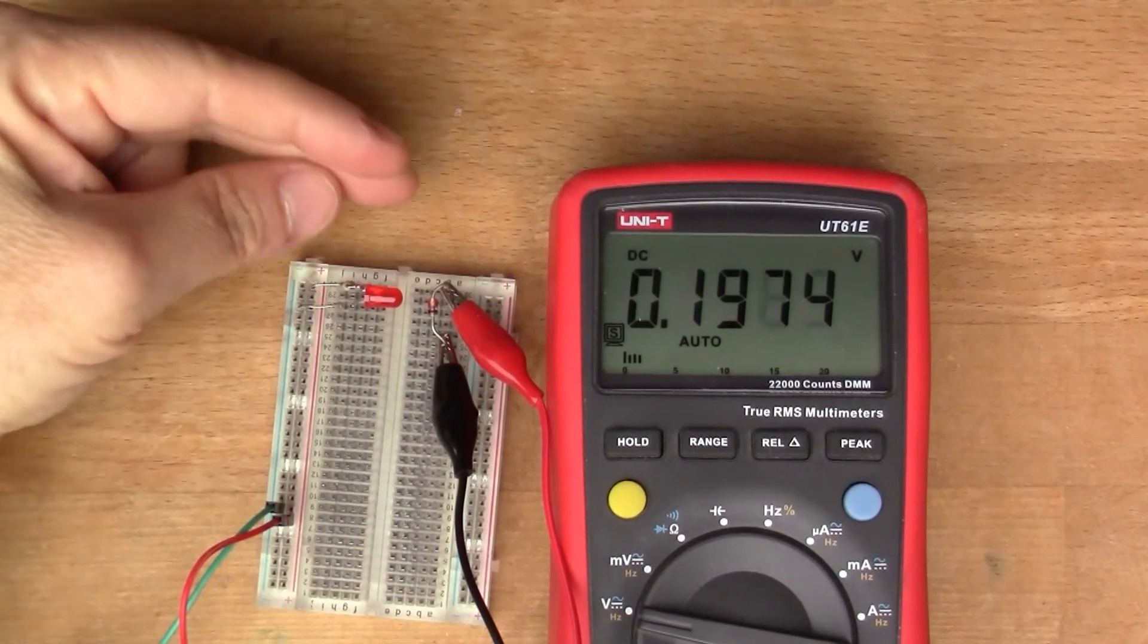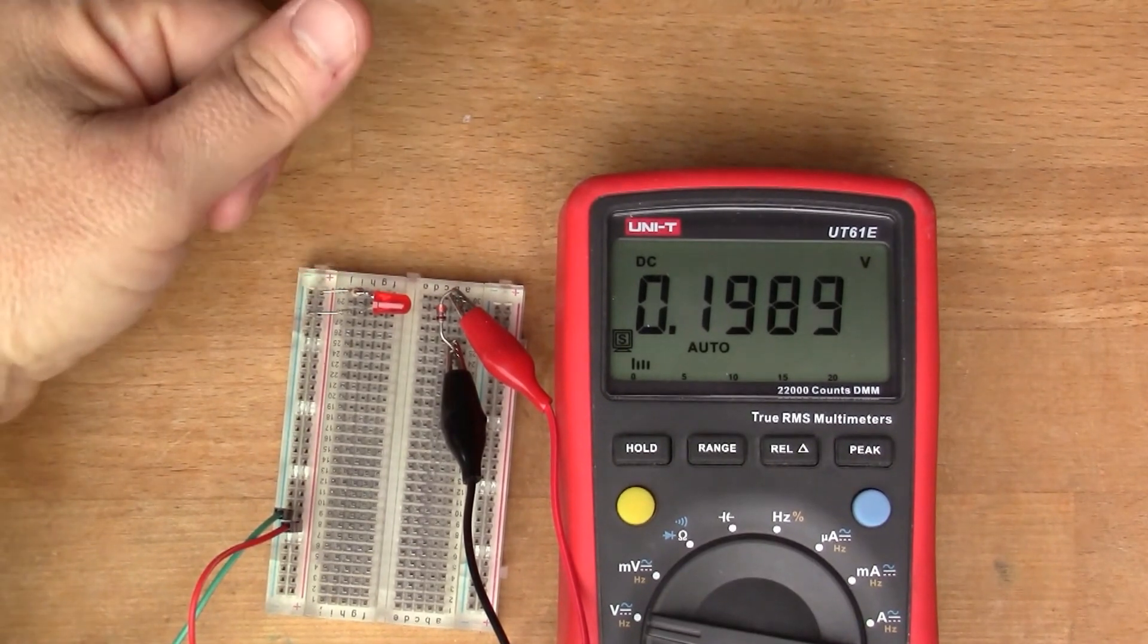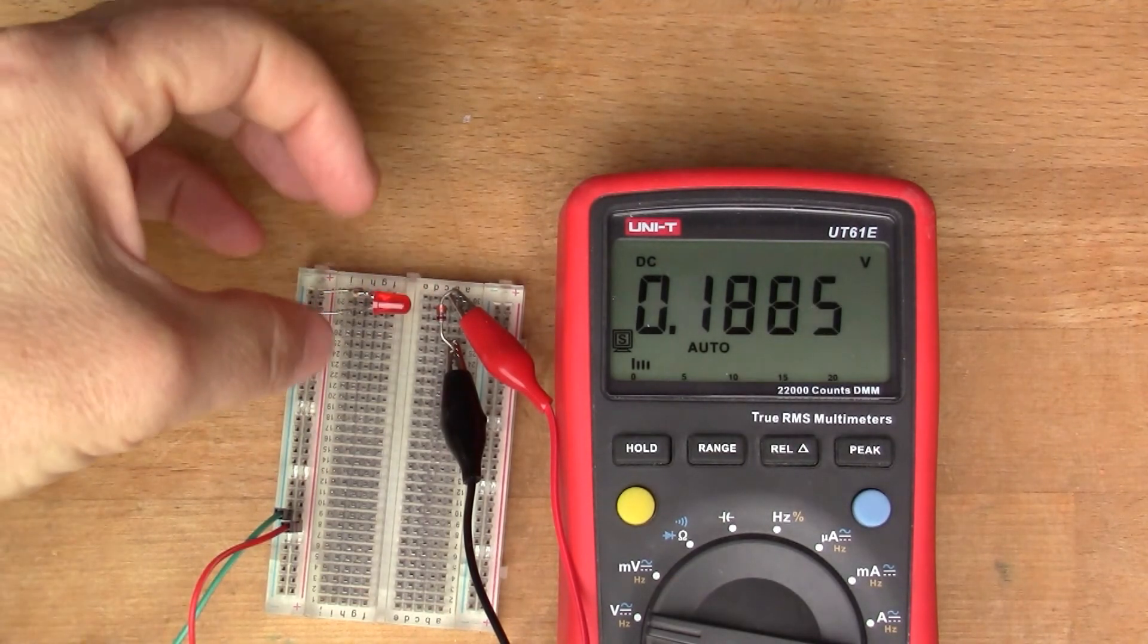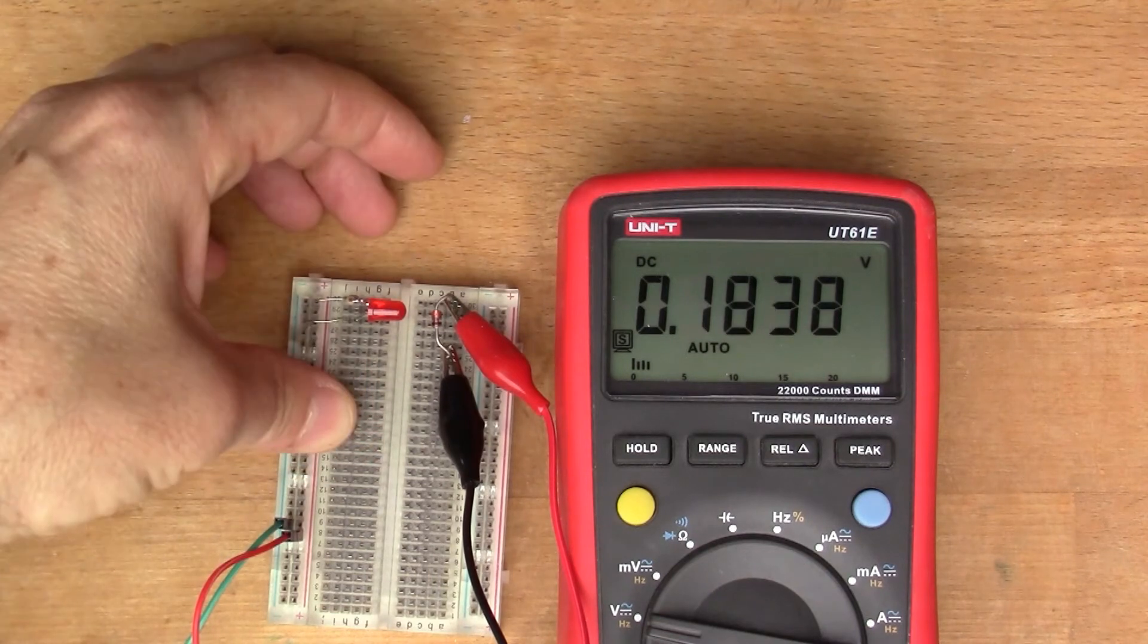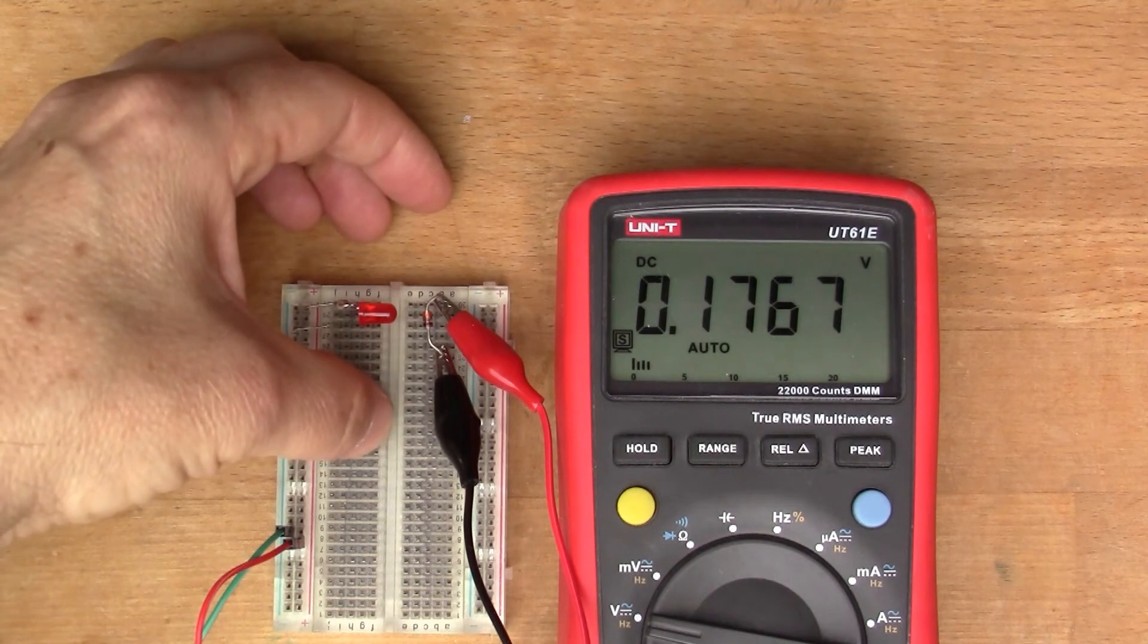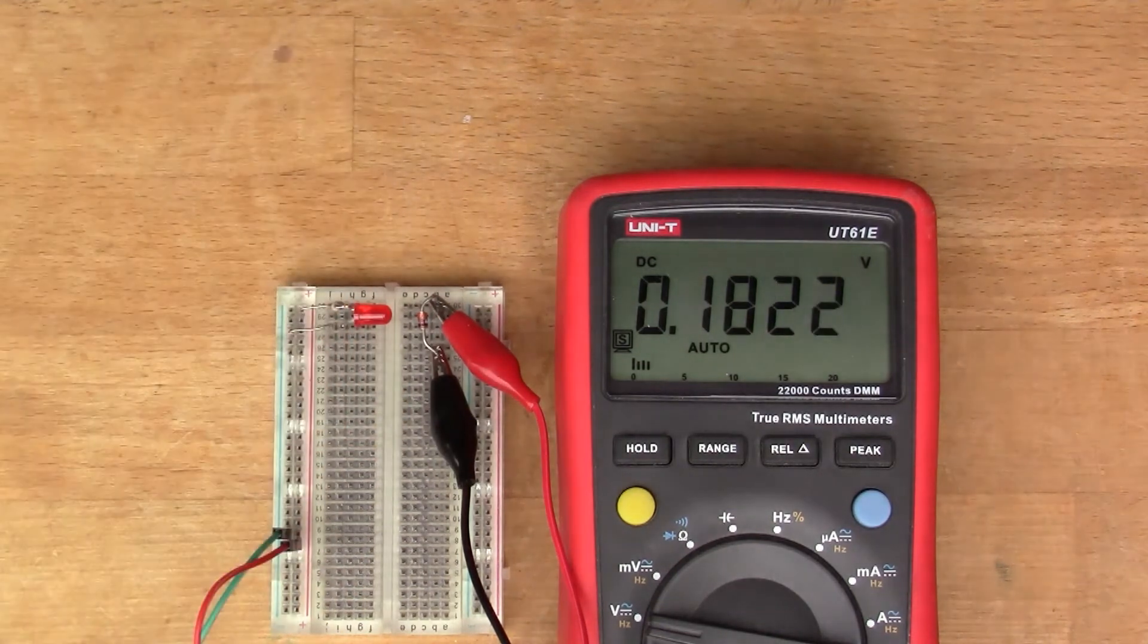So this diode being in a glass package can obviously be affected more by light. Often standard diodes are in a black enclosure so that they won't be affected by light. So I'd also like to try an LED because an LED can also be affected by light. So let me change it around and we'll look at that.